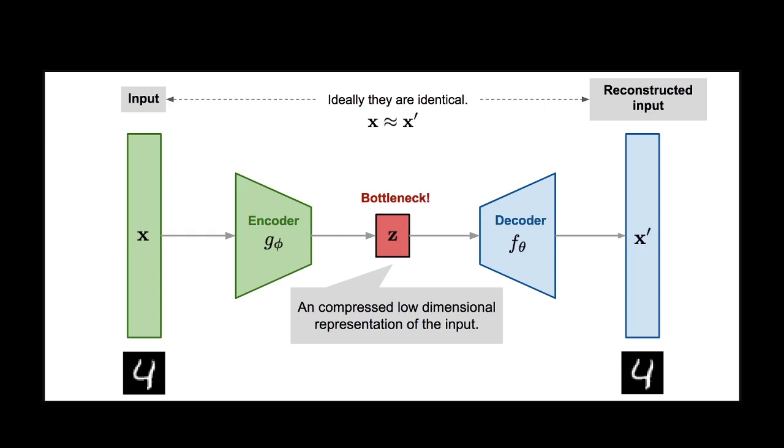So why do we use autoencoders? What we want is this middle layer. We want an abstract representation of our data and we'll be using this abstract representation when making our deepfakes.